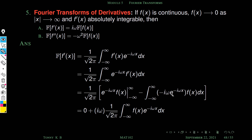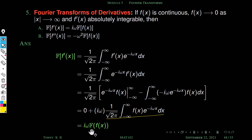We are left with two minus signs, which combine to give a plus. Since iω is constant with respect to x, it comes outside the integral. The remaining integral (1/√2π) ∫₋∞^∞ f(x) e^{-iωx} dx is exactly the Fourier transform of f(x). So F{f'(x)} = iω · F{f(x)}. That is our first result.